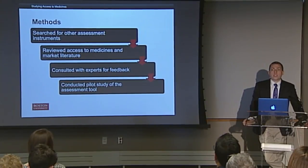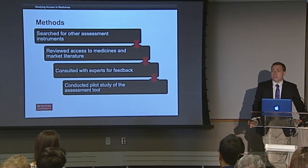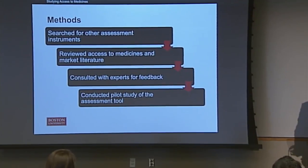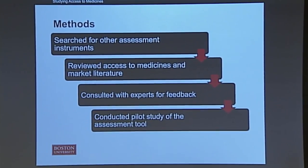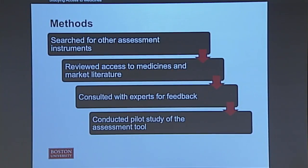For the methods of developing this assessment tool, we first searched for other assessment instruments looking at scientific quality and measures of scientific rigor. We looked at market research manuals to see what important outputs there were for market research studies. Surprisingly, we didn't find any other measures of how to assess the quality of pharmaceutical market industry reports or market reports at all, so we had to develop a lot on our own. We also reviewed access to medicines literature and market literature to see what was really important both to include and what researchers really needed. We consulted with experts at the School of Public Health to review our criteria and scoring mechanism, then updated the tool. After our final version, we conducted a pilot study using four different market reports.